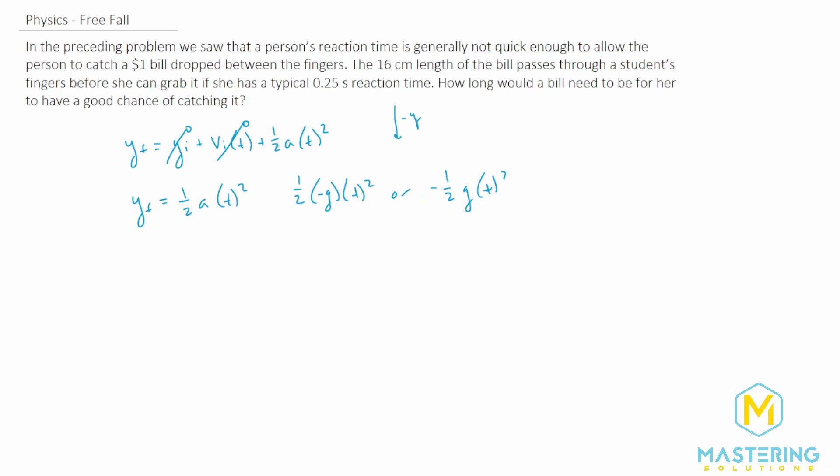A lot of times when we write the kinematic equations they'll put this as a negative one half gt squared just for the sake of making the equation simpler. But both of these are the same so whichever one works for you.